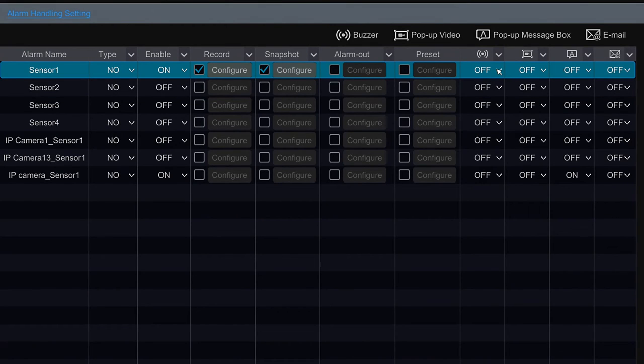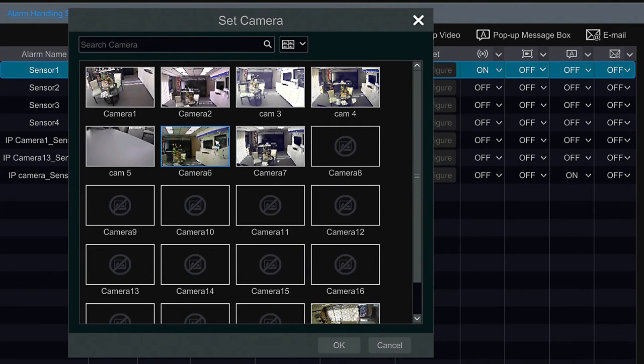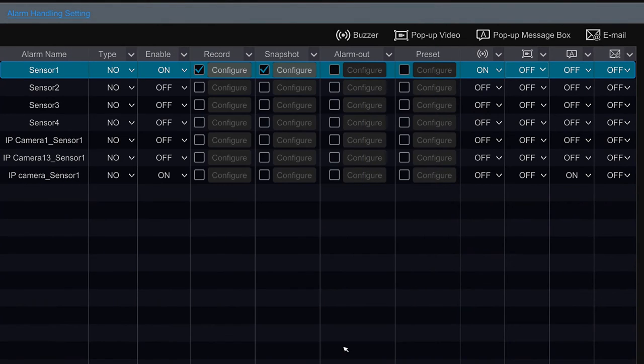I want the DVR to beep when the sensor gets activated, so I am going to select on. I also want the camera to pop up in full screen, so I can select the camera that I want. For this case I am going to select camera number two. Then I also want a warning message on the system.